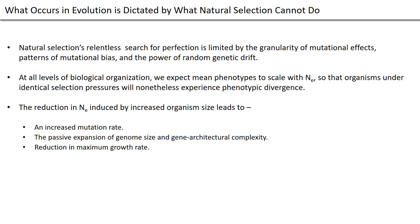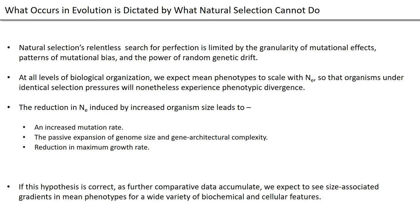So this is really a unifying hypothesis for explaining patterns of diversity in a wide range of biological traits. If this hypothesis is correct, as further comparative data accumulate, we expect to see size-associated gradients in mean phenotypes for a wide variety of biochemical and cellular features.